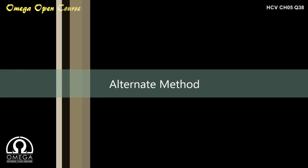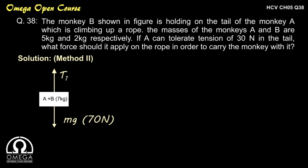Now let us look at the alternate method. Whenever two or more particles are moving with the same acceleration, we can take them as a system. In this case, let us take monkey A and B together as a system with a combined mass of 7 kg. The forces acting on this system are the tension T1 in the rope that monkey A is holding and the combined weight of both monkeys, which is 70 N. For minimum tension, both monkeys move up with no acceleration, so net force = 0, giving T1 = 70 N.